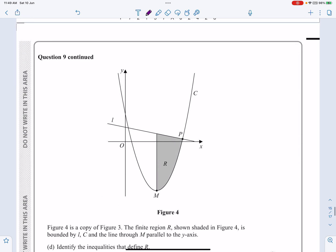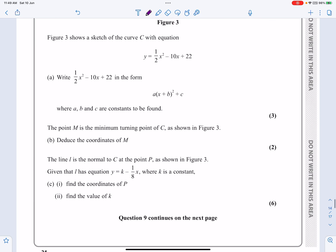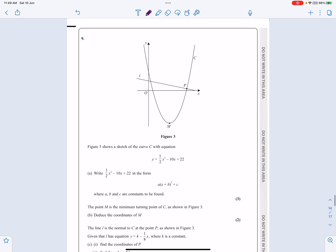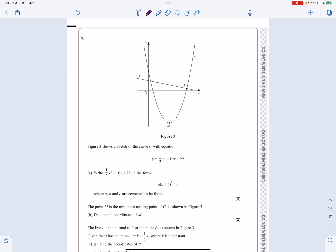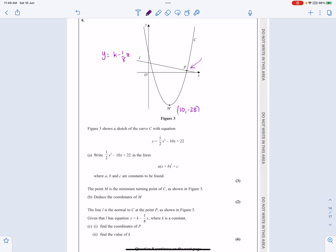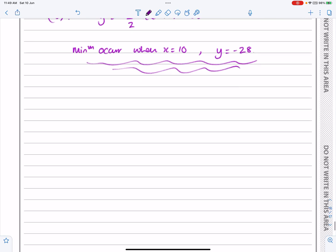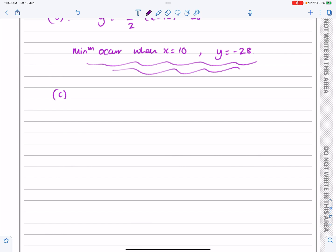What does part C say then? Part C says, come back to this diagram again. Given that L has the equation, y equals k minus an eighth x. I might put this information on my diagram now just to help me. We've got L is y equals k minus an eighth x here. We've already got that this is the point (10, -28) here. And what they're asking to find is the point P there. OK, so that's what we're asked to find for part C.